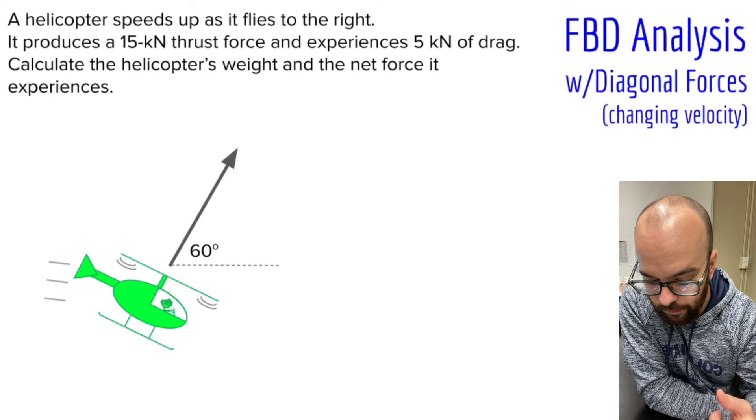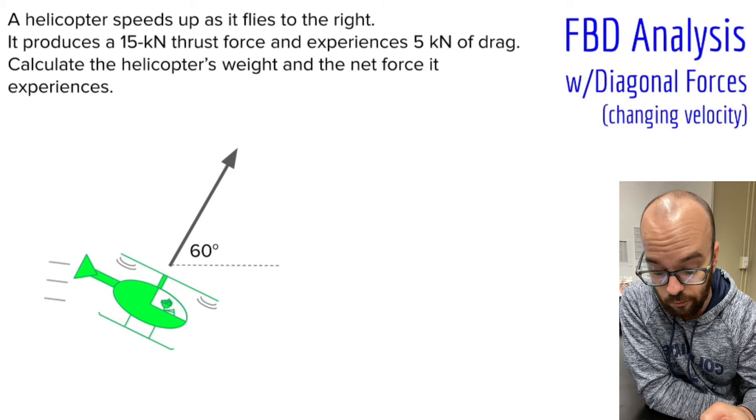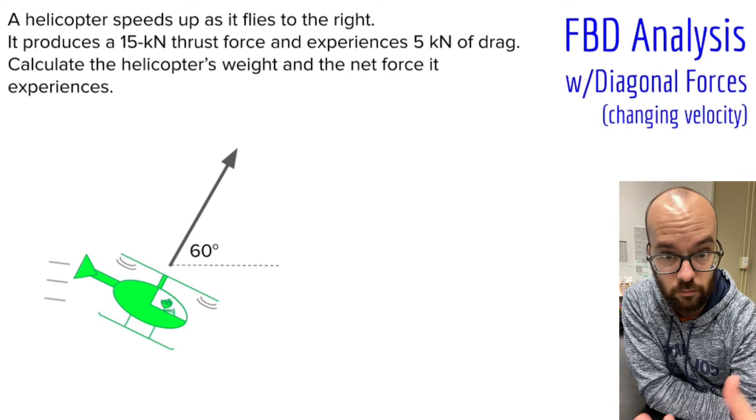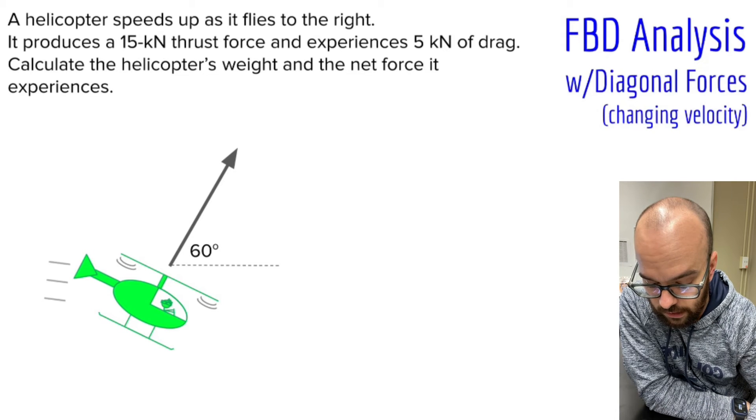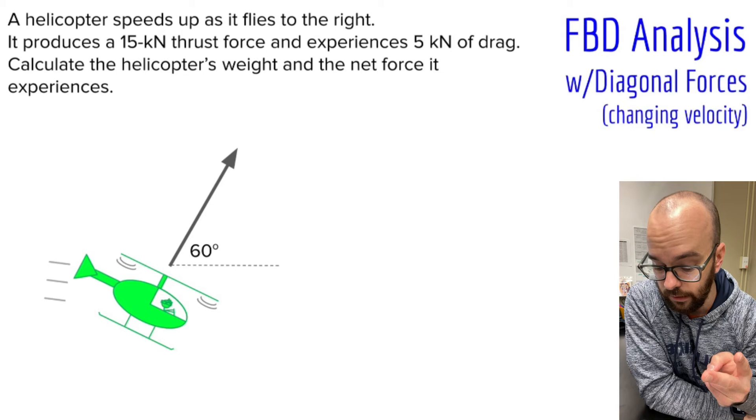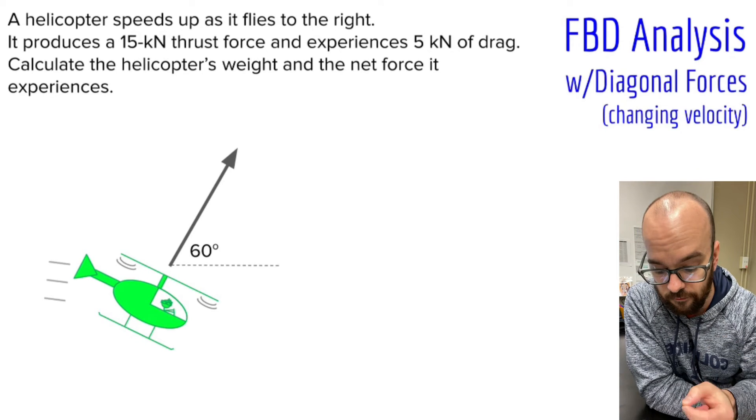So let's read the problem. The helicopter speeds up as it flies to the right. That tells me I expect my net force to be in the direction that it's speeding up, which would be to the right. It produces a 15 kilonewton thrust force and experiences 5 kilonewtons of drag. We're calculating two things: the helicopter's weight, that's its force of gravity downward, and the net force it experiences. Remember, net force is the overall resultant force when you add up the force vectors.